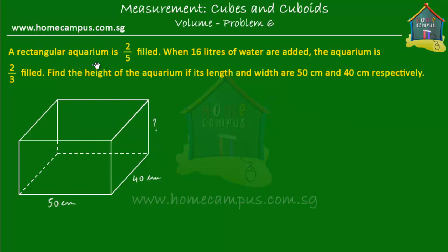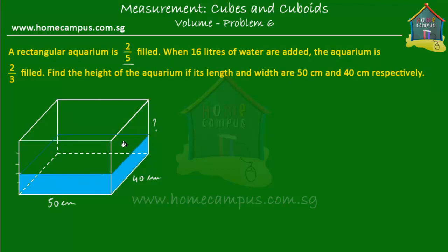Now, the information given: the rectangular aquarium was two-fifths filled at first. If we divide the aquarium into five equal parts, it was already filled until about this level — two-fifths of the height. So let's mark that here. There was water until this level at first.